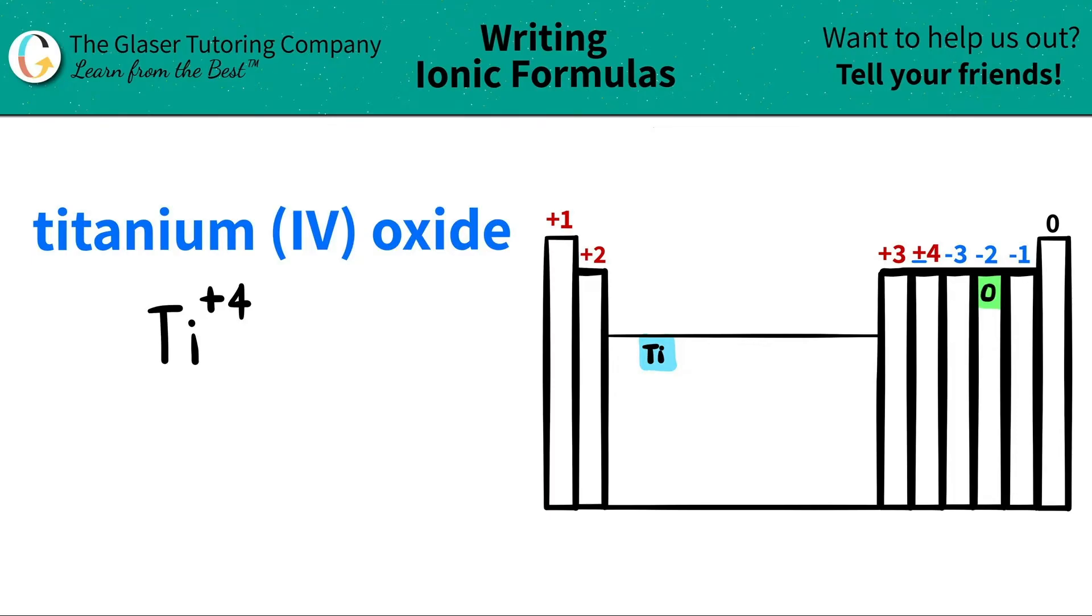Oxygen is represented as an O. And it's in this group. And it's going to be a negative two charge. That's the common trend for the charge of that group. I'm going to write that oxygen is a negative two.